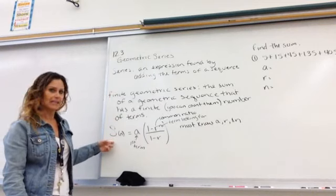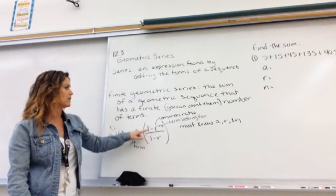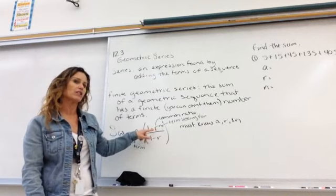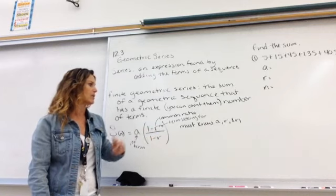So here's our formula. S stands for sum. N is how many we're looking for. A is your first term. It's 1 minus R to the N. R is still our common ratio. N is still the number of terms we're looking for. Over 1 minus R.